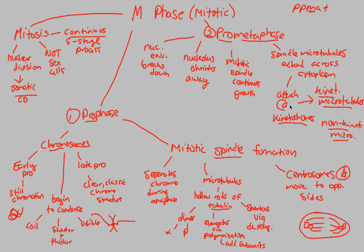Overall, in this first part of M-phase we've covered mitosis: nuclear division of somatic cells, not sex cells, as a continuous five-stage process. We established prophase as the first phase, and concluded with prometaphase — chromosomes finally leave the nucleus as the envelope breaks and the nucleolus disappears. Metaphase, where the microtubules begin pulling, is what we'll get into in the next video.